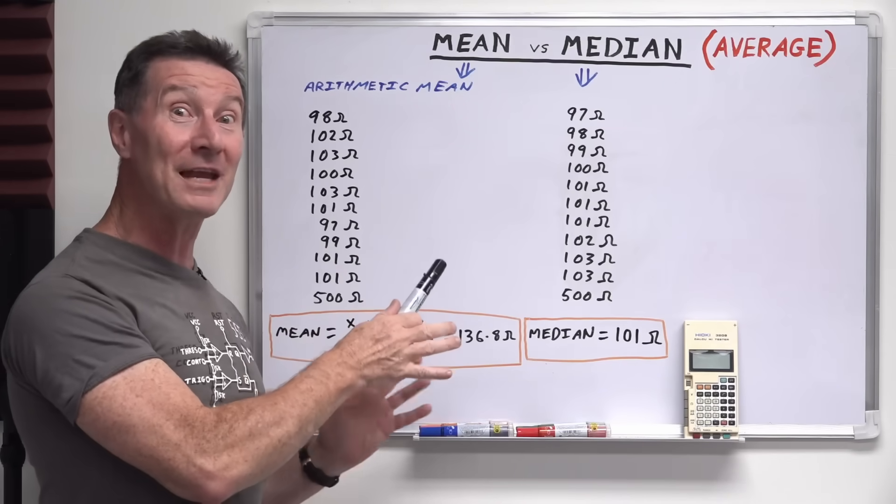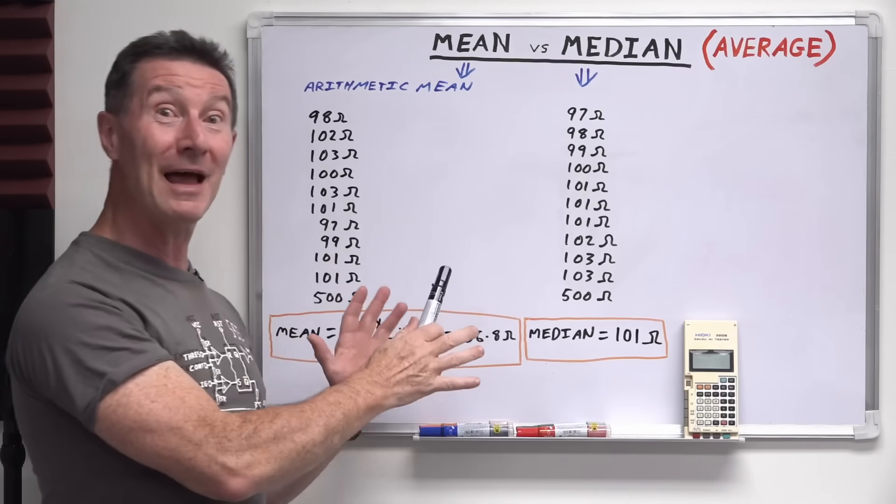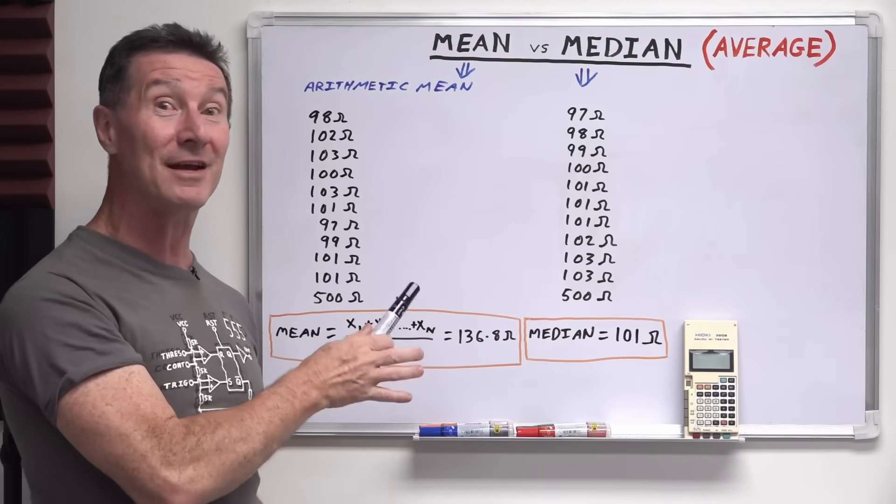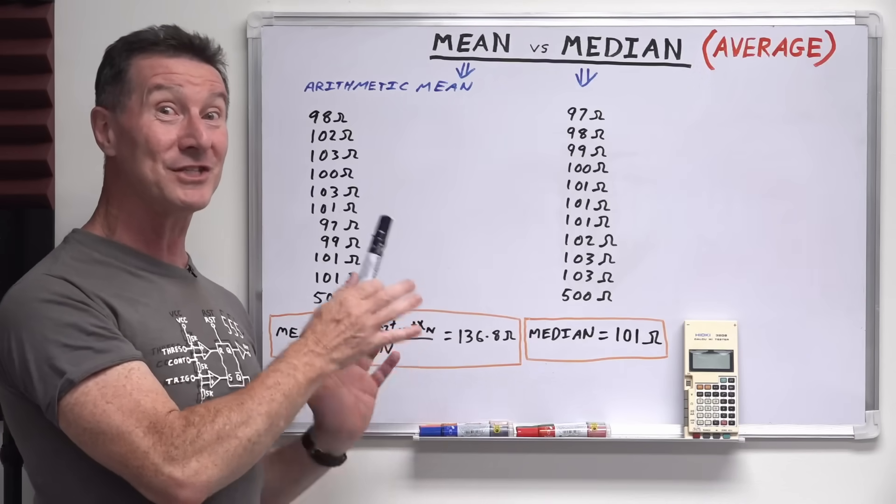Or people can take advantage of you by manipulating numbers. As Mark Twain said, lies, damn lies, and statistics.